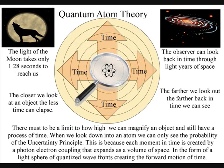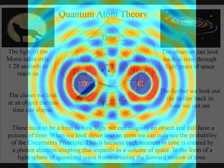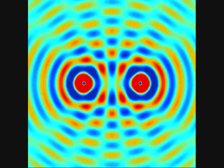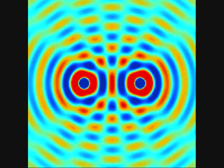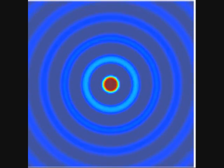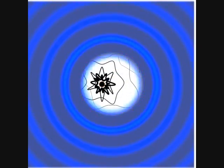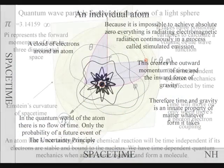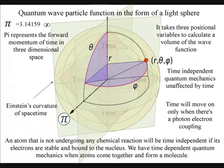When we look down into the atom, we can see time-dependent quantum mechanics, when the atoms bond together, forming space-times of their own. But when we zoom in on an individual atom, we find time-independent quantum mechanics, and there is no flow or arrow of time, and all we have is an electron cloud of probability.